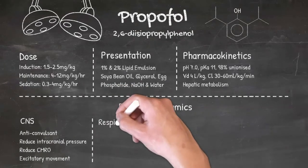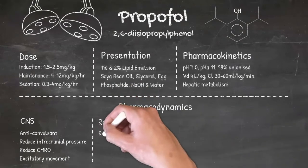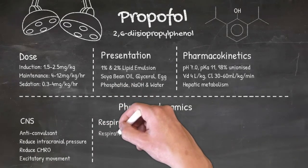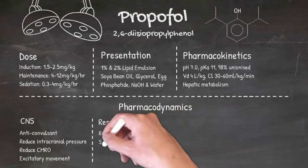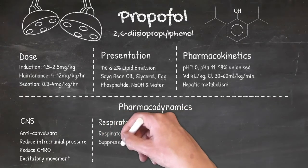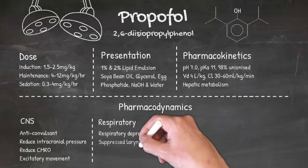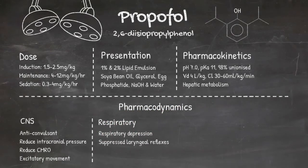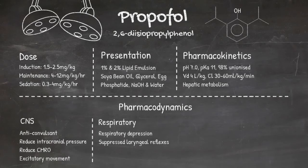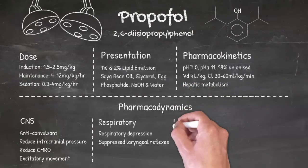In terms of the respiratory effects of propofol, it suppresses the respiratory drive, particularly the response to hypercapnia. Laryngeal reflexes are also significantly depressed, which makes propofol a really good choice if you plan on siting a supraglottic airway.